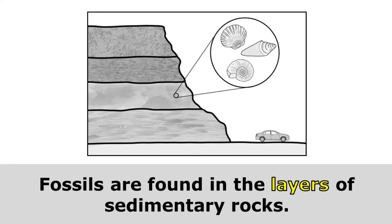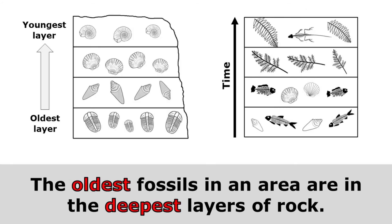Fossils are found in the layers of sedimentary rocks. By studying what layer a fossil came from, we can get an idea of about how old it is. The oldest fossils in an area are in the deepest layers of rock, because they were buried long before the other fossils.